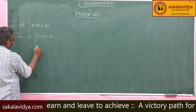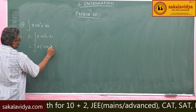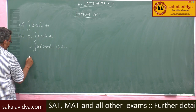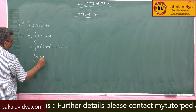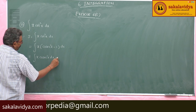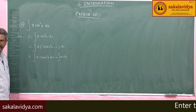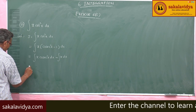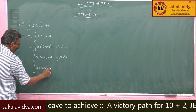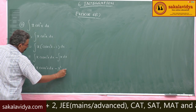So I = integral of x·(cosec²(x) − 1) dx = integral of x·cosec²(x) dx − integral of x dx = integral of x·cosec²(x) dx − x²/2. Call this equation 1.